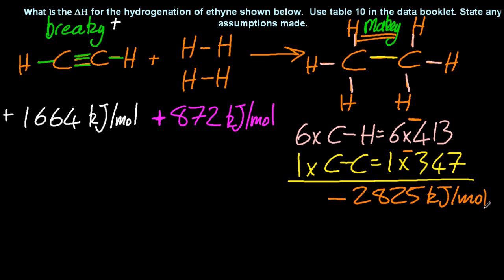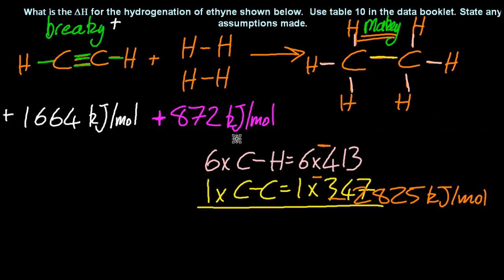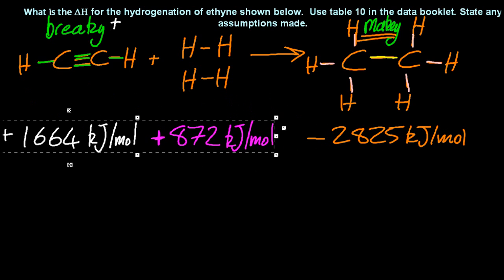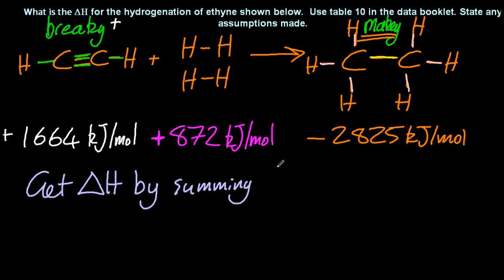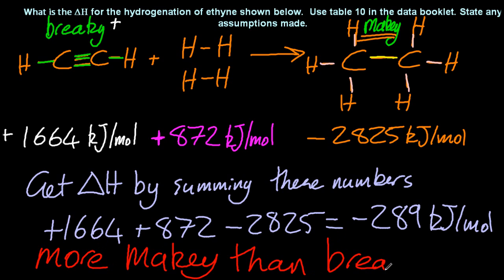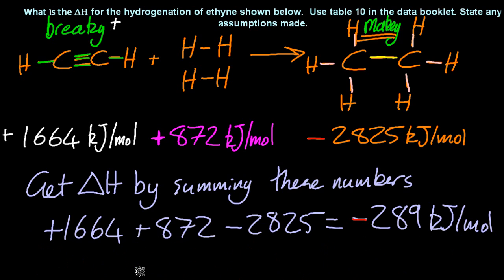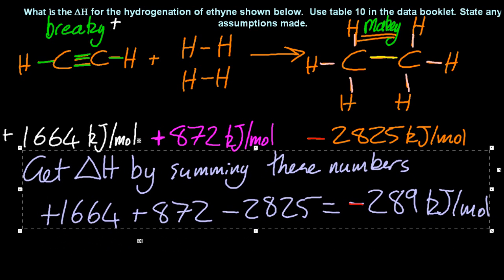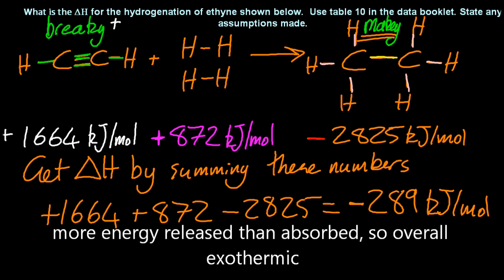So now I have the energy change for each side of that equation. And the trick now is to sum those numbers. But my teacher says do it a different way. Do it a different way, then. This is the way I do it. Sum those numbers up. And that gives you delta H for that equation. In this case, minus 289 kilojoules per mole. There's more makey than breaky. Now, you can't put that for the IB. In this case, it might be true, but you can't use those words. That's silly. So what will they accept? Better to say, more energy released than absorbed. So overall, it's exothermic. And your assumptions are everything's a gas and it's at STP.